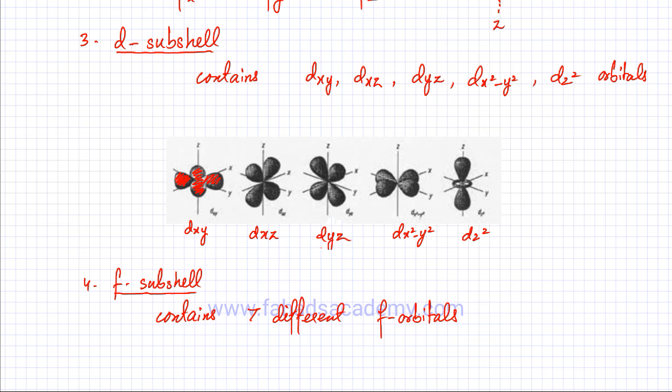Lastly, the F-subshell is going to have seven different F-orbitals. That is all you need to remember for the F-subshell.